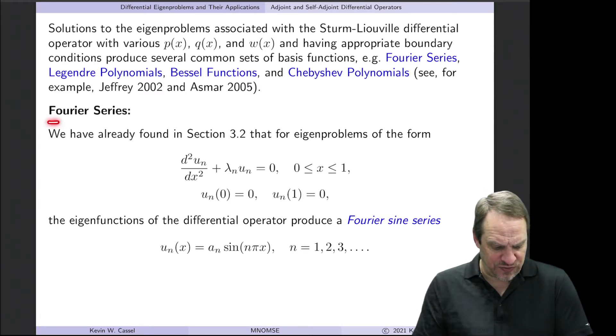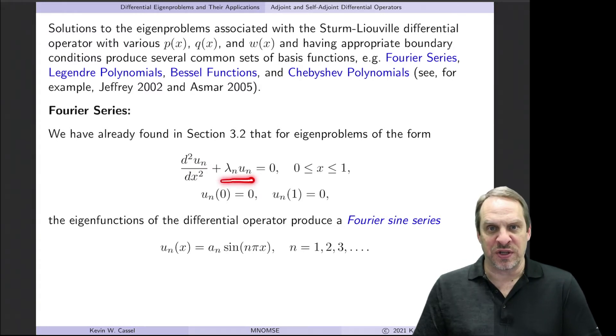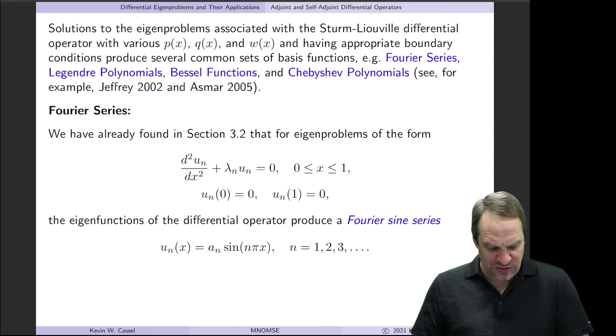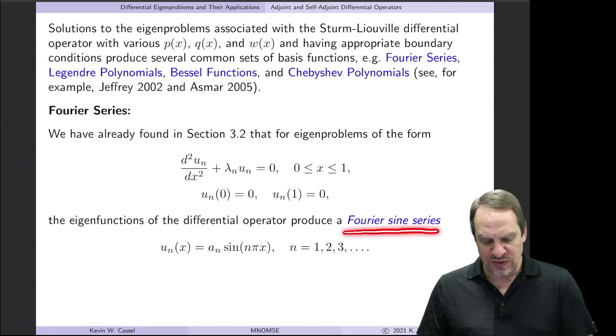So the first one we've already seen, and that's Fourier series. We did this early on in this chapter. So the differential operator is d squared dx squared. It's operating on u. And then the corresponding differential eigenproblem includes the lambda times u term. So this is our Sturm-Liouville equation. For boundary conditions where u is specified at zero and u is specified at one, both of which are zero to be homogeneous, we get that the corresponding eigenfunctions are a constant times sine of n pi x. So we call this the Fourier sine series. And we saw that in several examples earlier in the chapter.